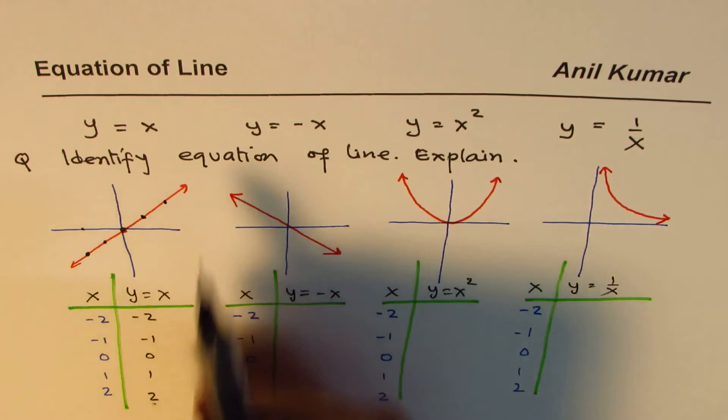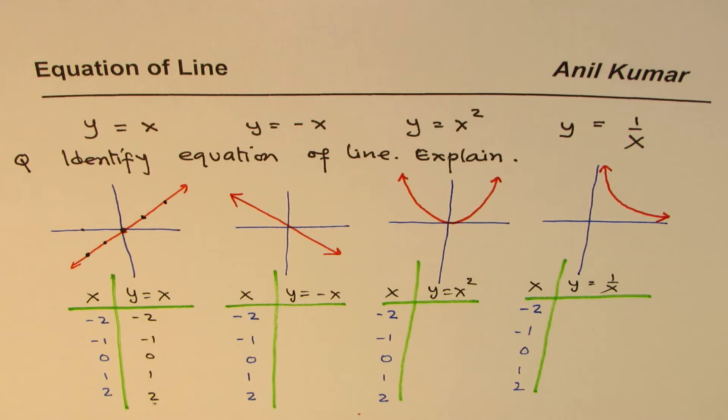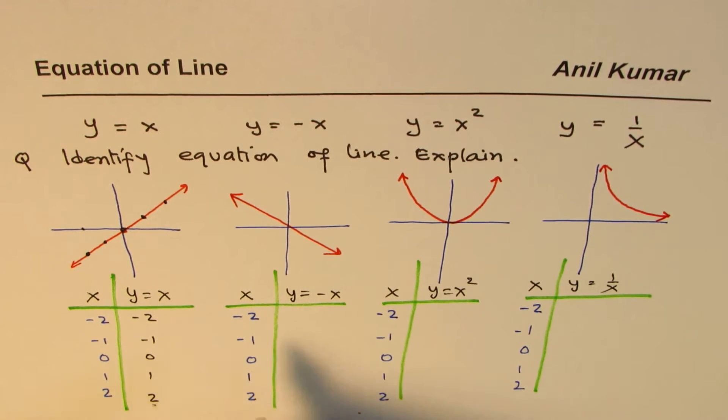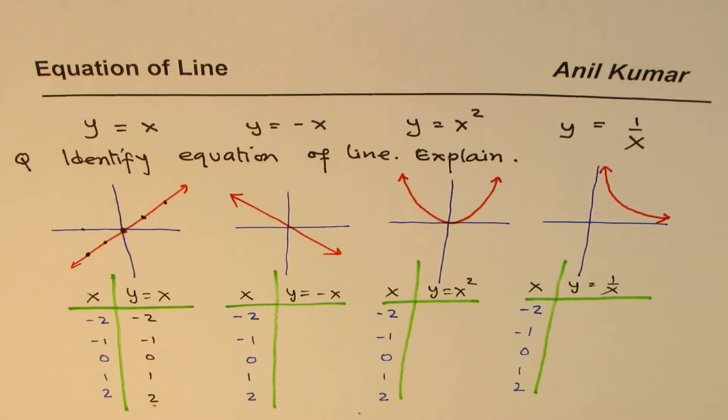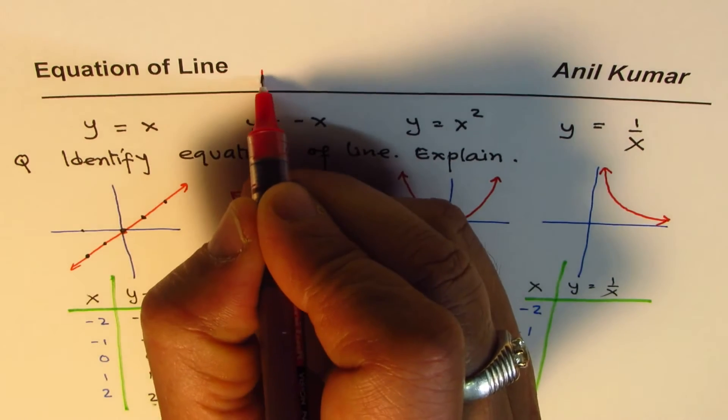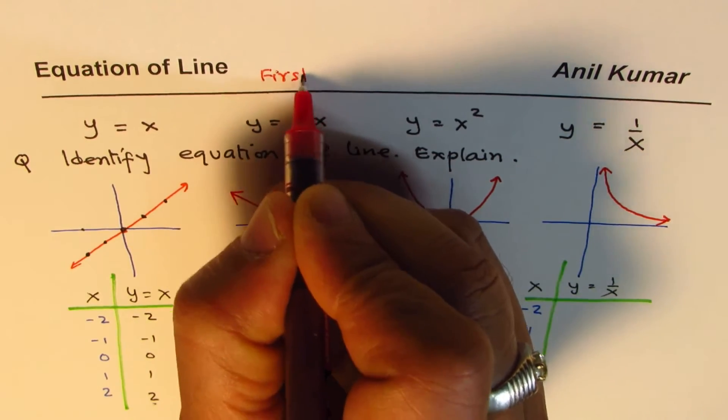If the line is straight, we know it's a linear equation which represented this line, so it makes sense. There is another explanation, and that is what we call first difference. Let me use the word here: first difference.